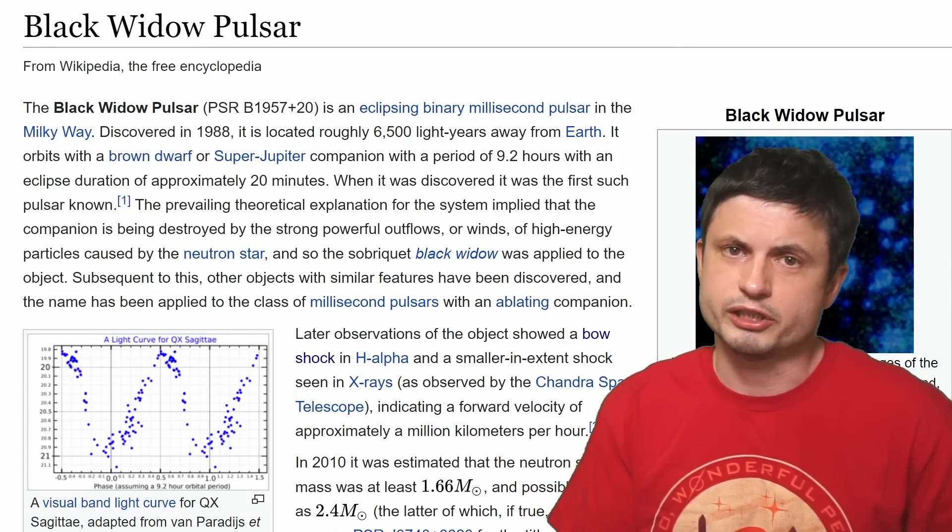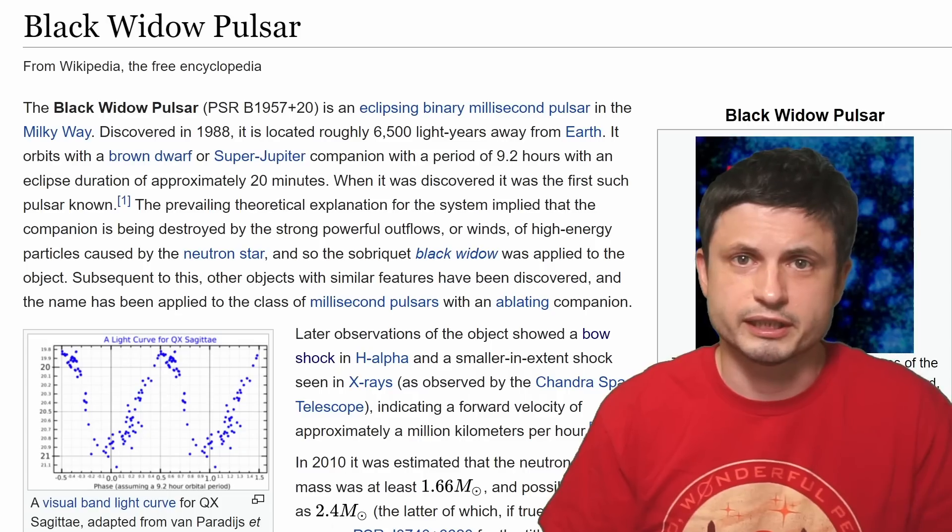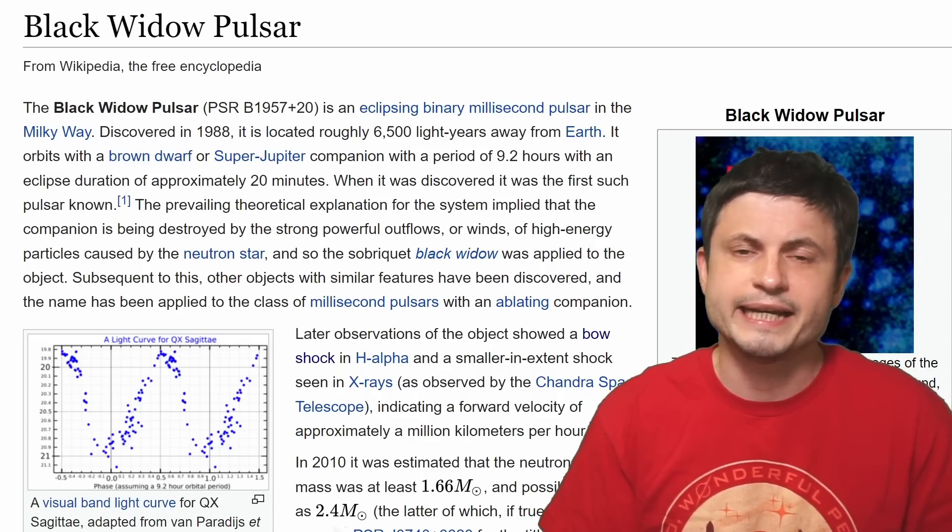And this particular name was actually given to this unusual millisecond pulsar binary that was originally discovered back in 1988. The system known as PSR B1957+20, whose x-ray and optical image you can see right here.